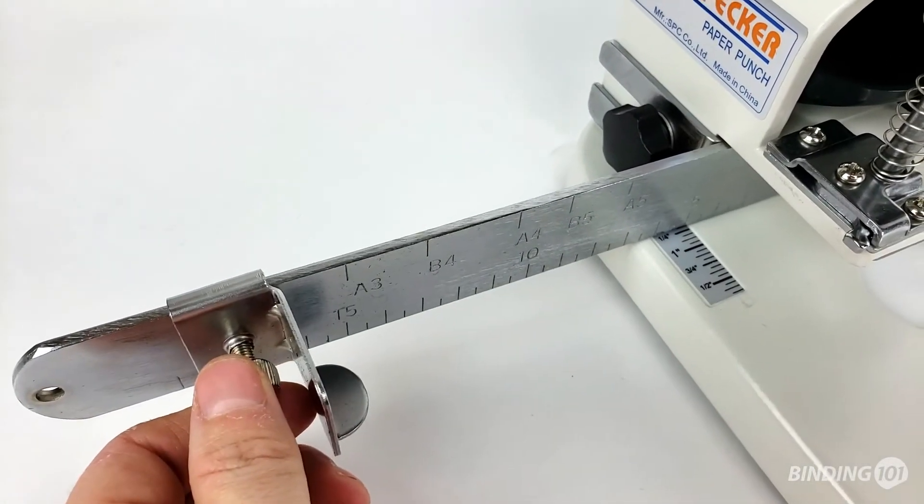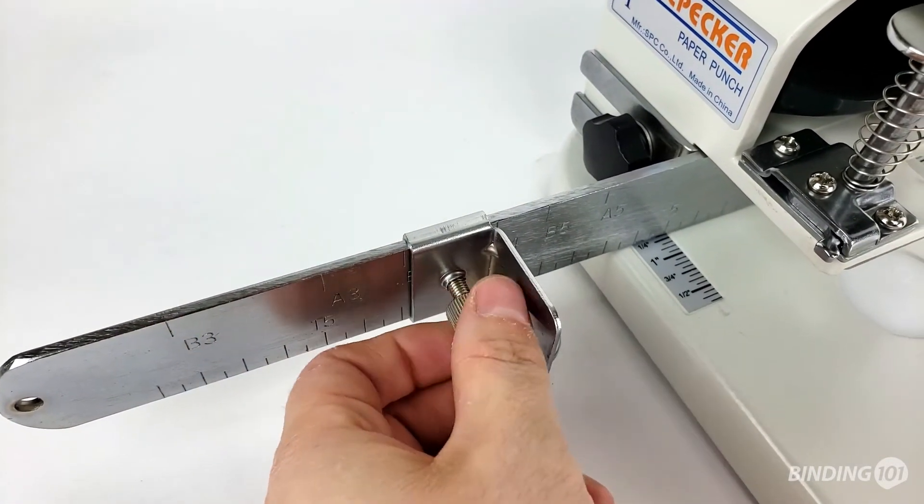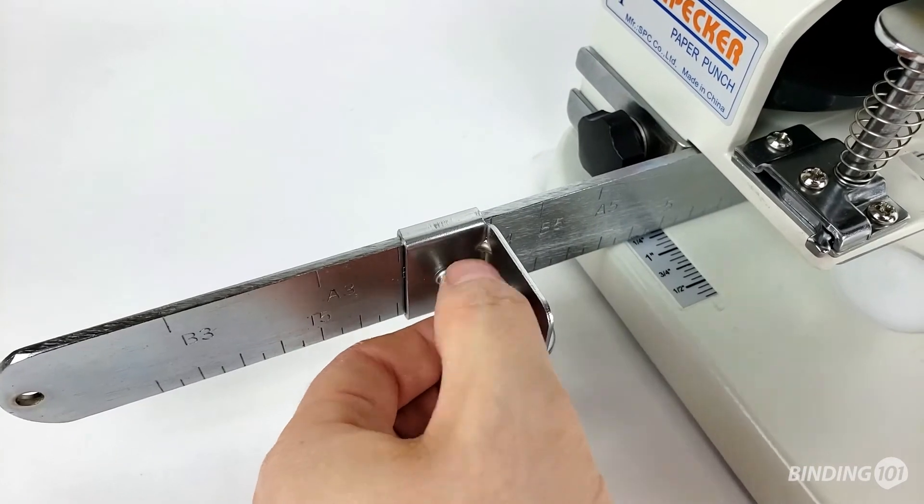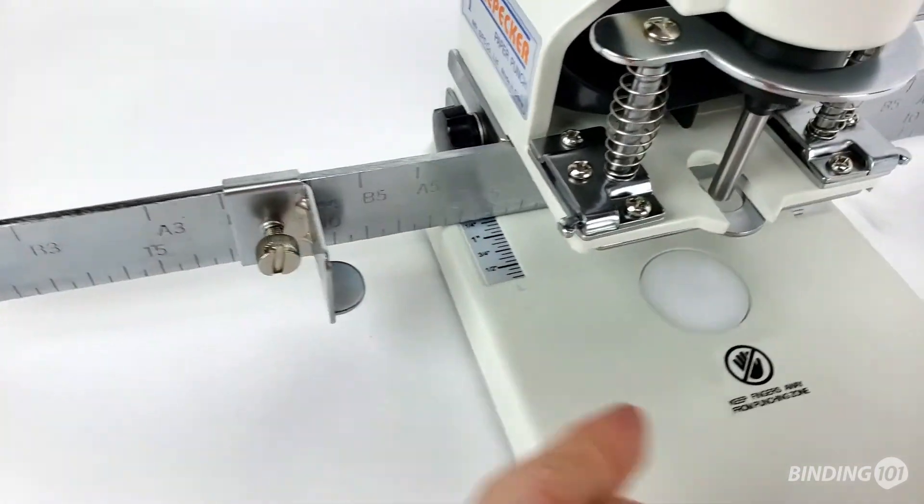Set up the paper guide for your sheet size and hole location. To move the side guides, just loosen the knobs, slide them into position, and tighten those knobs again.